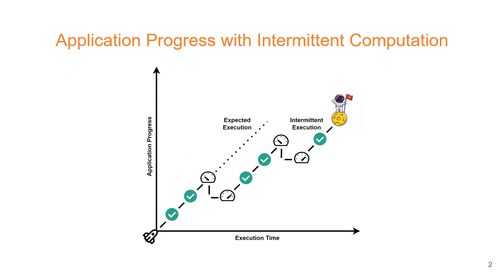Before I begin, I will give a very brief overview of Intermittent Computation since most of you must already be familiar with it by now. Energy harvesting devices are subject to frequent, unexpected power cycles. Intermittent computation enables forward progress of long-running applications by bridging short bouts of computation with checkpoints. In this figure, you can see the difference in the trajectory of application progress in normal computation as opposed to an intermittent execution scenario.